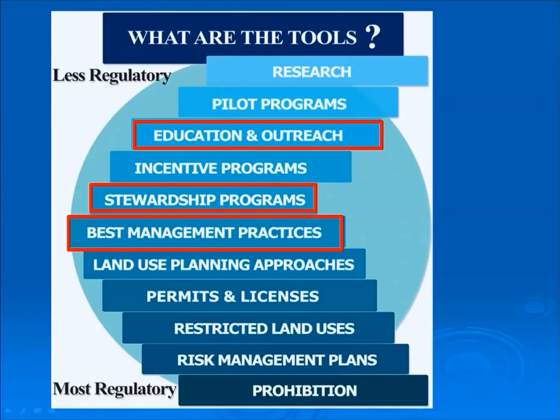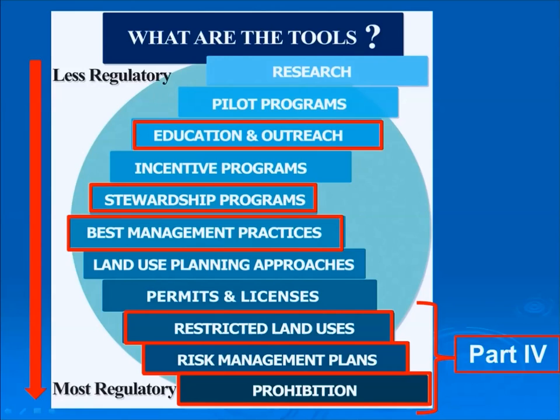This slide illustrates the available management options from least to most regulatory. Prohibition, risk management plans, and the related restricted land use tools are new tools under Part 4 of the Clean Water Act. They are only used when no other options are feasible. For example, land use planning cannot be directly applied to an activity such as pasturing and grazing.